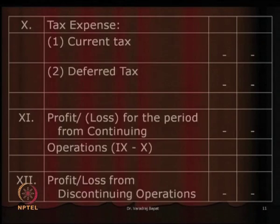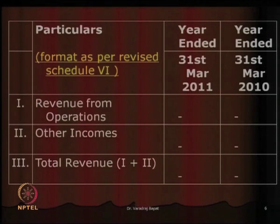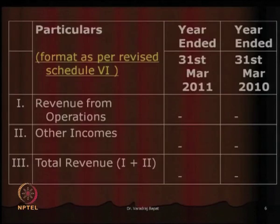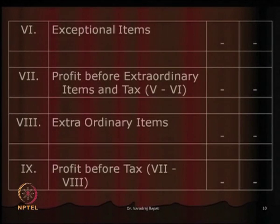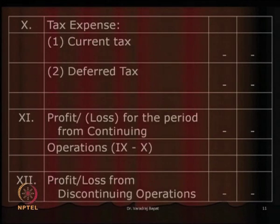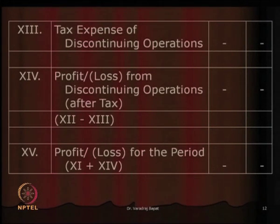So this was the detailed format as per Schedule 6 of the Companies Act. You take first revenues, reduce all expenses, adjust for extraordinary and exceptional items, adjust for taxes to get profit from continued operation, calculate profit or loss from discontinued operation, and the total is profit or loss for the period.